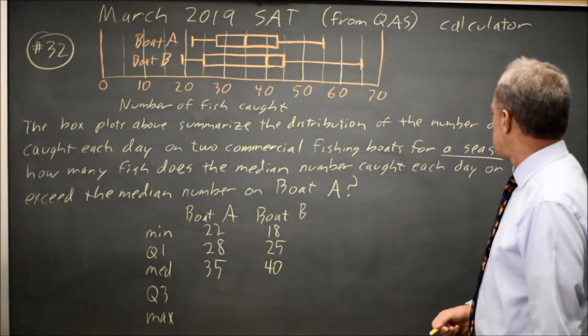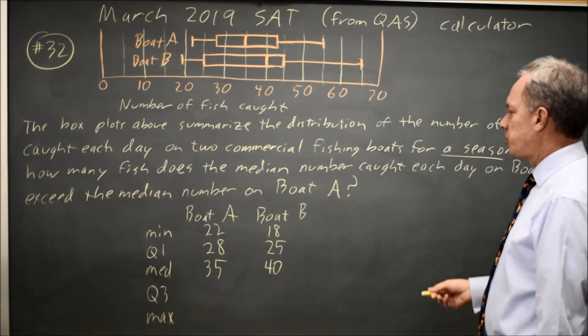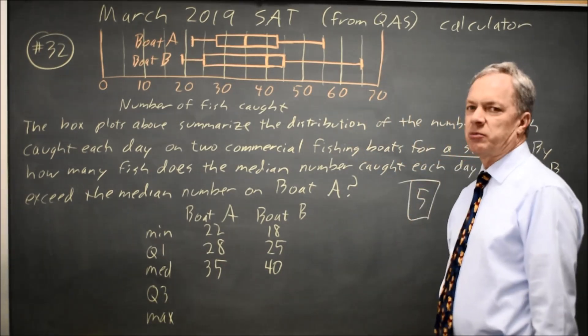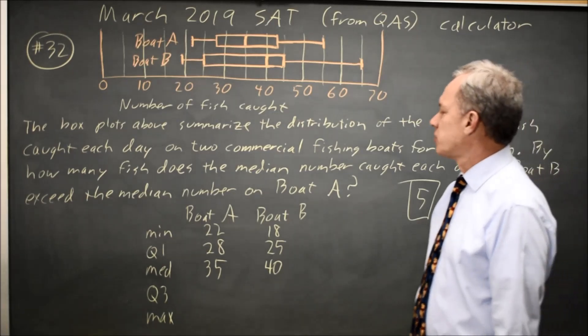And right now, their question was, by how much does the median on boat B exceed the median on boat A? That'd be 40 minus 35 is 5, is our answer this time, but it's worth looking at the rest of the box plot in preparation for the future.